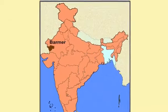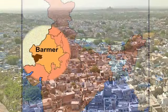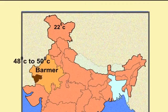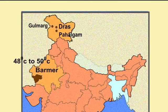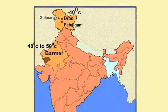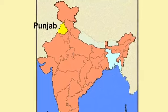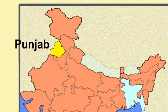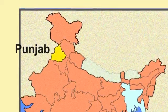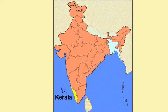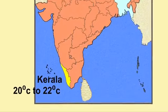If I take temperature, Barmer in Rajasthan may record a temperature of 48 to 50 degrees Celsius on a June day, while it hardly reaches 22 degrees Celsius at Pahalgam or Gulmarg in Kashmir on the same day. However, in Raas near Kargil, the temperature may go down to minus 40 degrees Celsius during winter. Kerala has tropical climate with warm and moist air whereas Punjab has continental climate with severe heat alternating with severe cold. The temperature touches minus 40 degrees Celsius in Kargil in December, whereas Kerala records 20 to 22 degrees Celsius in the same month.